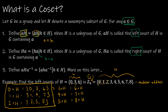The last definition is AHA inverse: we take all elements of H, multiplied on the left by A and on the right by A inverse. That's another type of coset we'll talk about more later.